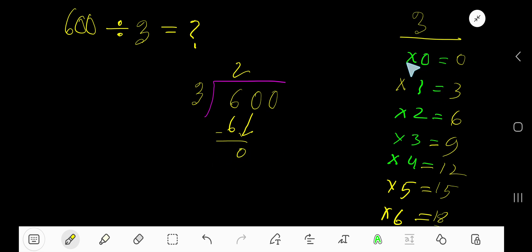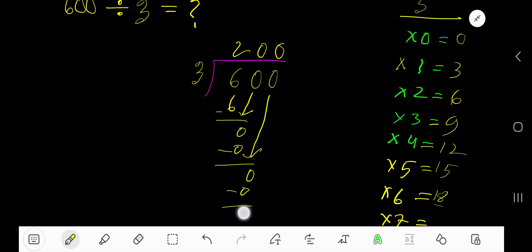Write 0. 0 times 3 is 0, subtract 0. Bring down this 0, so 0, 0 means 0. 3 goes into this 0 how many times? 0 times. 0 times 3 is 0. Now subtract, your remainder is 0.